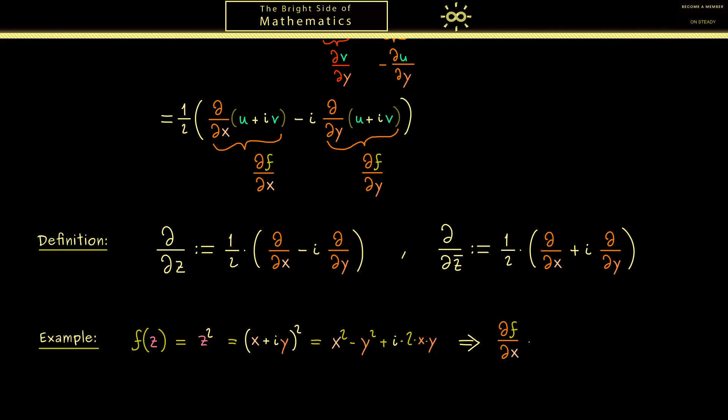Therefore this first part here is our function u and this part is our function v. With this we can immediately calculate df/dx which is here 2x plus i2y. And similarly we can calculate df/dy which is here minus 2y plus i2x. Now both things can be simplified when we just use the fact that x plus iy is the complex number z.